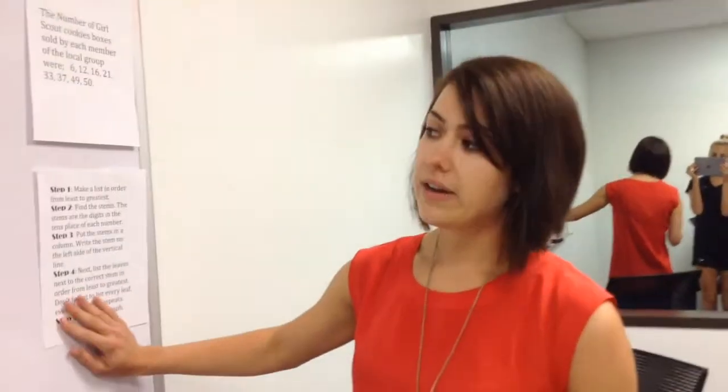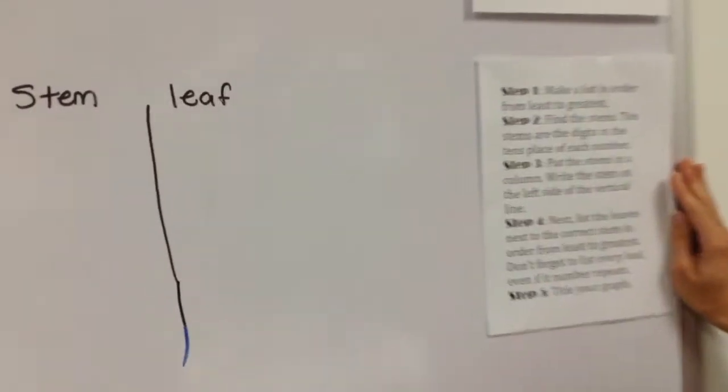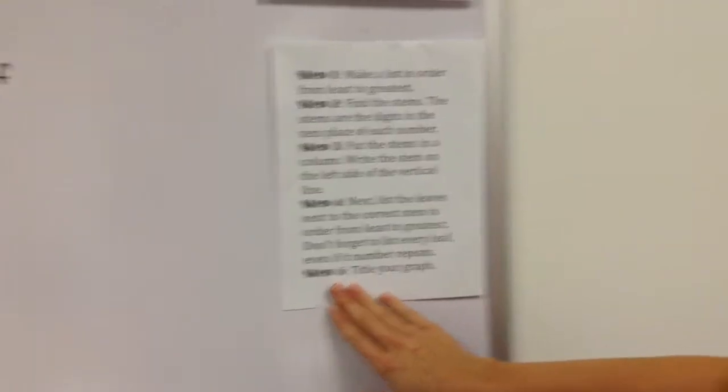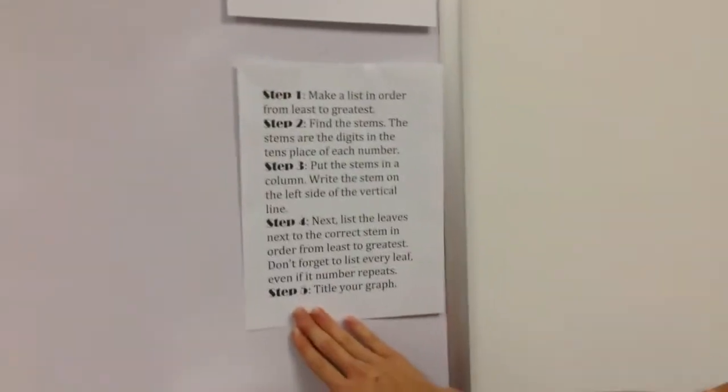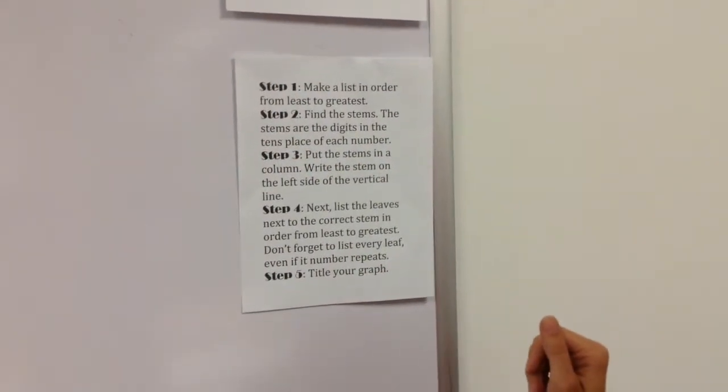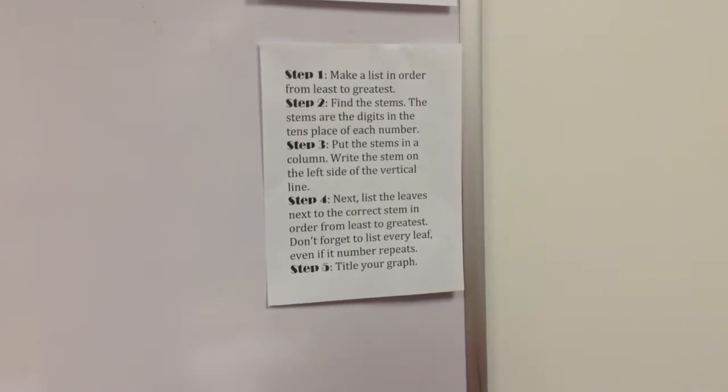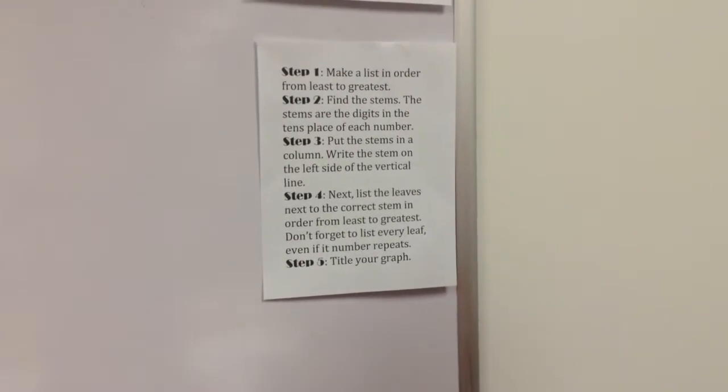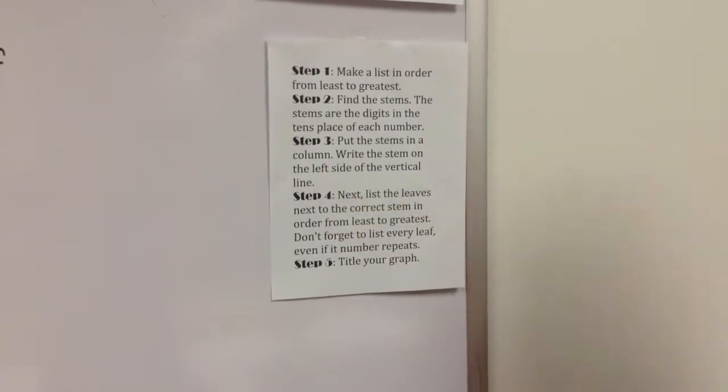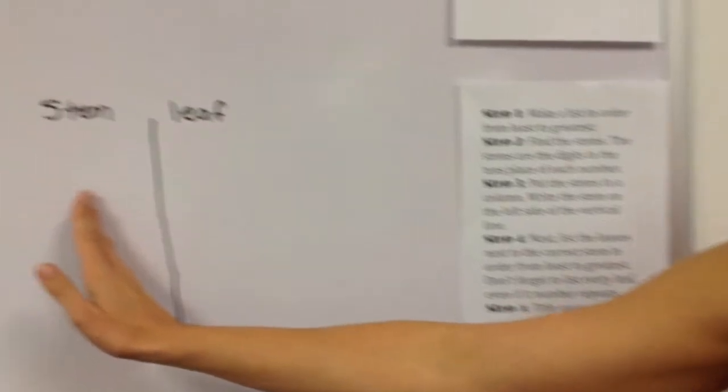So I've even got down five steps that we can use to follow along with as we are trying to work out our problems. So I'm going to go ahead and read them to you, and I'll point them out, and you can pause and come back to these steps anytime you need. Our step one will be making a list in order from least to greatest. Step two, find the stems. The stems are the digits in your tens value place. Step three, put the stems in a column. Write the stem on the left side of your vertical column.